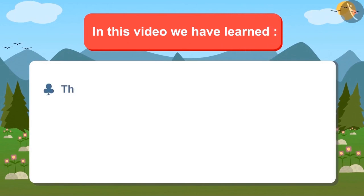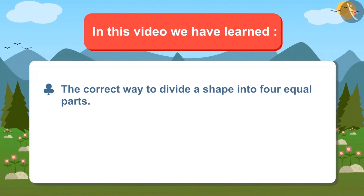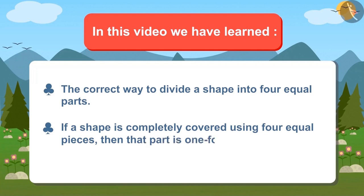Today we have learnt what is the correct way to divide a shape into four equal parts. And if a shape is completely covered using four equal pieces, then that part is one-fourth of that whole figure.